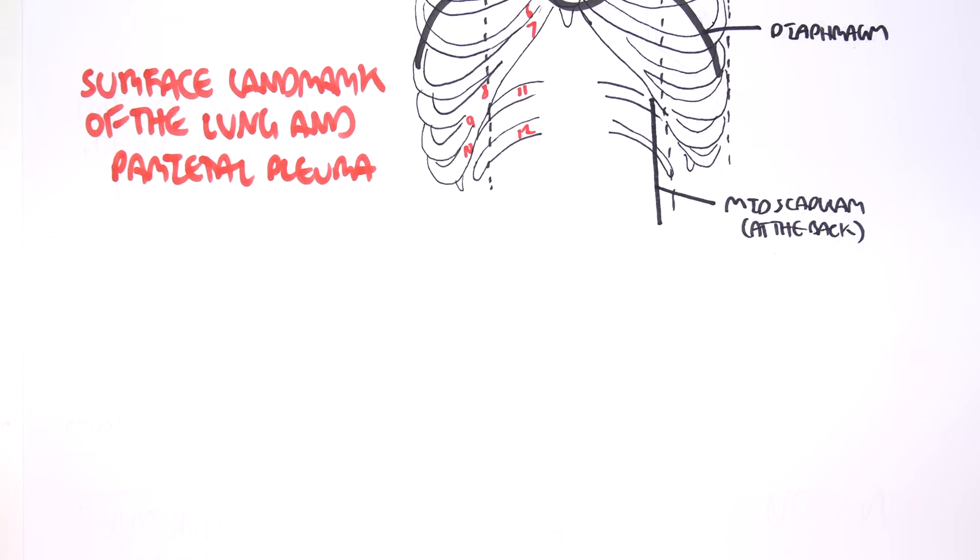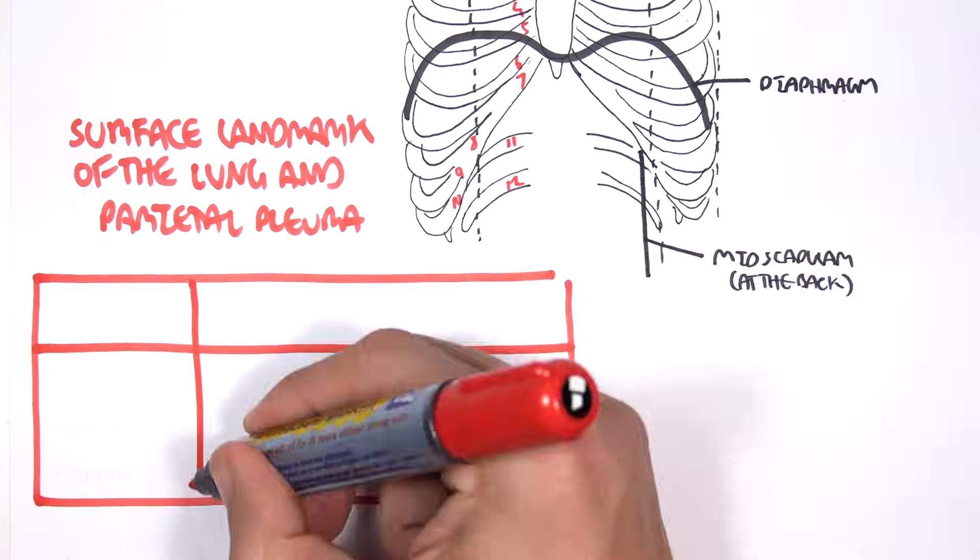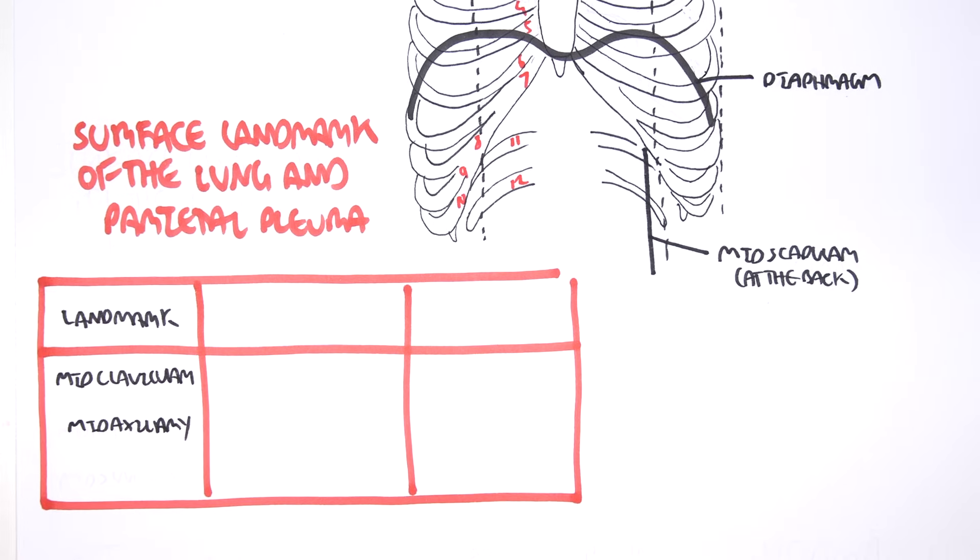So again, the pleura is essentially a membrane that covers our lungs. And the pleura can be divided into parietal and visceral pleura. Visceral pleura is the one that covers all our lungs, and the parietal pleura is the layer above it.